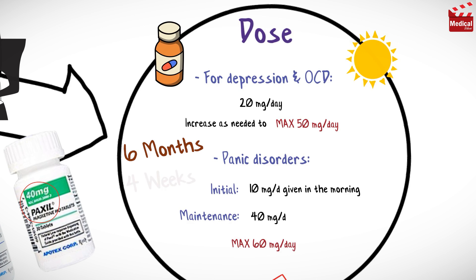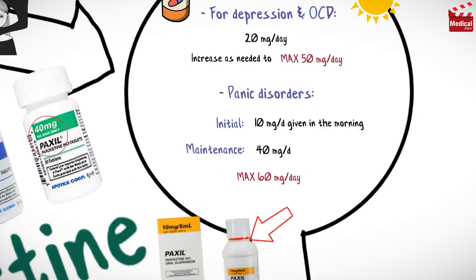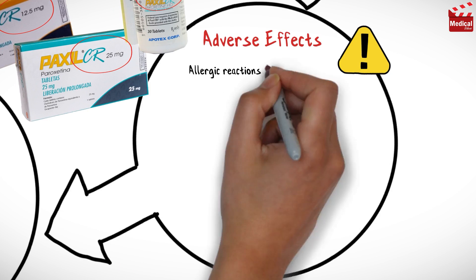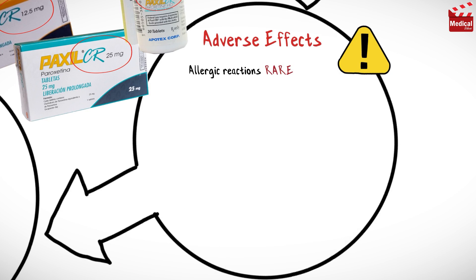The duration of treatment is a minimum of six months. The effectiveness of the drug may not be apparent until four weeks of treatment. Treatment should be discontinued gradually, and if signs of relapse occur, the dose should be increased.